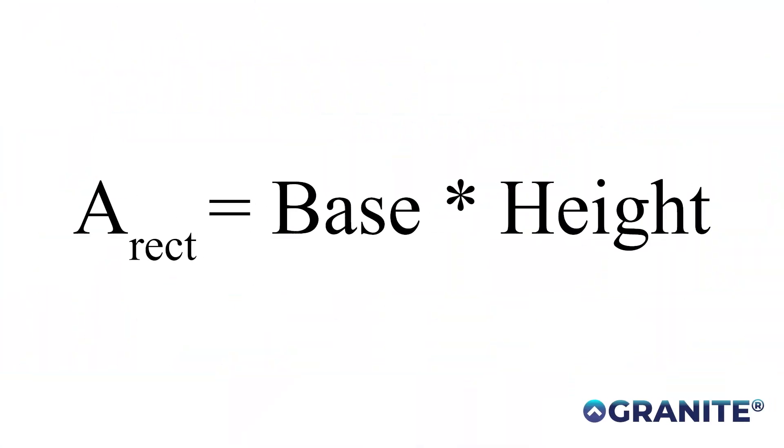Tip number four is critical: you have to know the area of a rectangle. The ACT historically loves areas of shapes. The area of a rectangle equals the base times the height. If you want to learn how to find areas of more complex forms, check out the ACT Everything Course linked below — we have many lessons on finding areas of complex shapes like those that appear on the ACT.